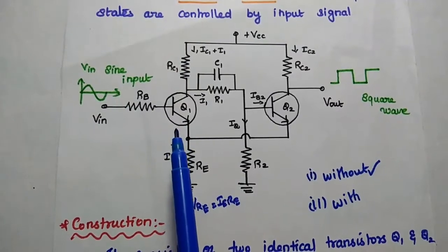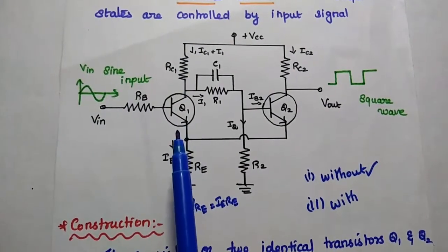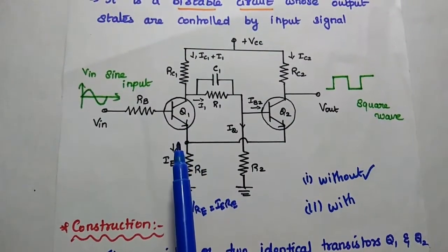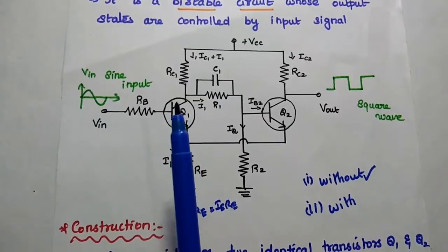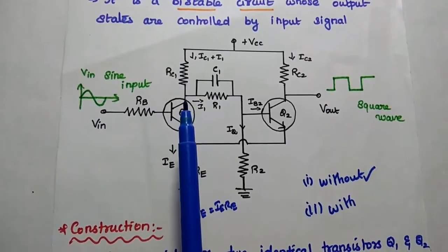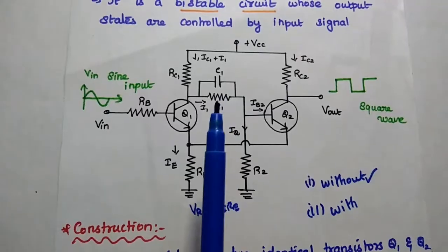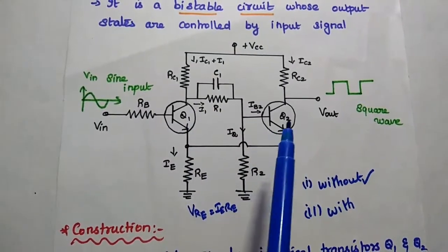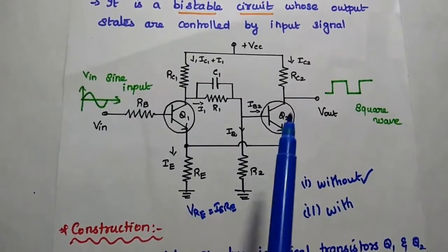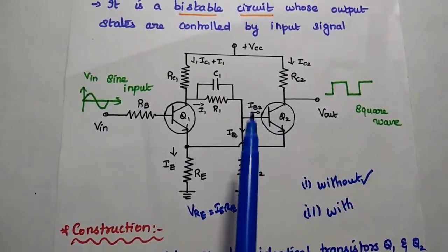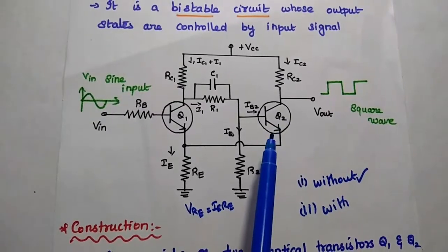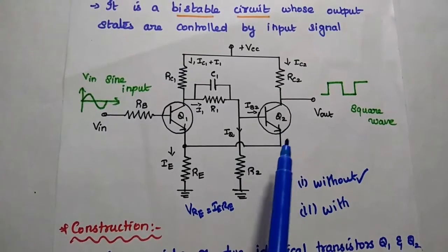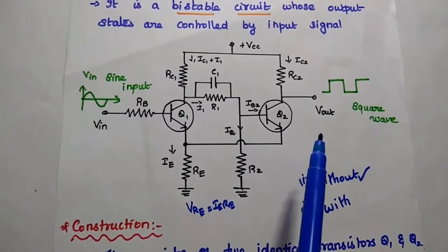Q1 is driven into the cutoff region — that means Q1 is in the off state. When Q1 is in the off state, the voltage at the collector of Q1 is equal to the supply voltage VCC. This collector is coupled to the base of Q2, which increases the forward bias of Q2. If the forward bias is increased, then Q2 is driven into the saturation region.